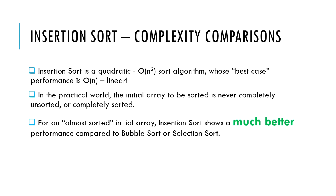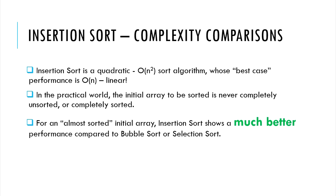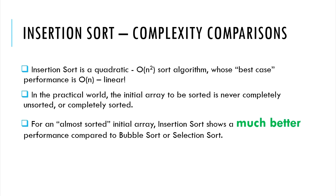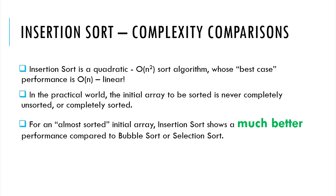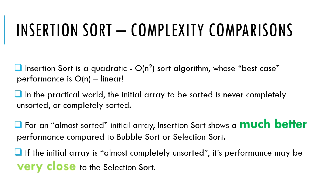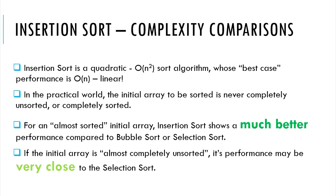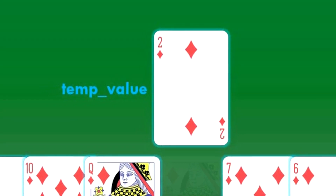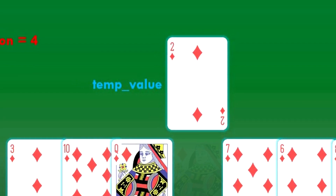For an almost sorted array, insertion sort time complexity goes towards O(n) and is therefore much quicker than the O(n²) complexity of selection sort. For an initial array that is almost completely unsorted, the performance is very close to selection sort. Therefore, for arrays with a small size, insertion sort is often recommended. It is a stable algorithm and its memory overhead is quite small — we just need one temp value variable to hold the value at the current position.